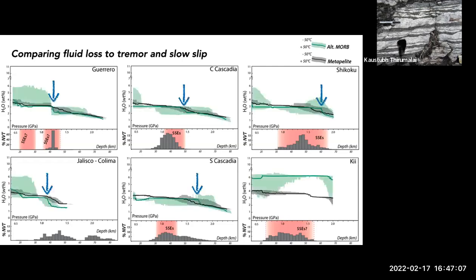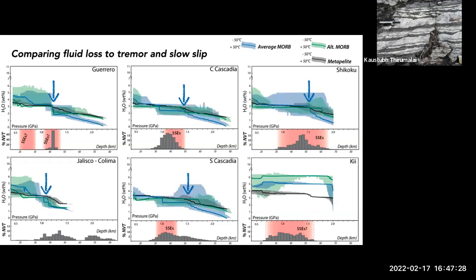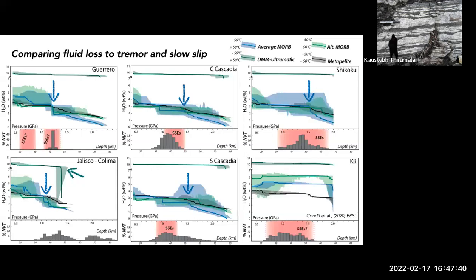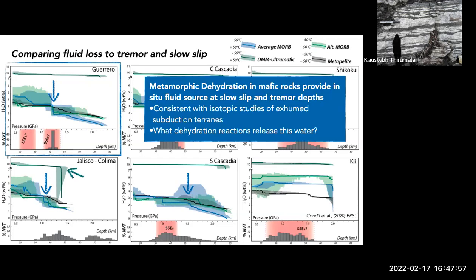We see an even stronger relationship with average MORB — releasing up to two weight percent water in Guerrero, and similarly in southern Cascadia/Clallam, Cascadia, and Shikoku. When we look at depleted harzburgite mantle (our ultramafic rocks), in almost all areas the rocks don't get hot enough for serpentine to break down, except for southern Cascadia/Clallam, which is a very hot subduction zone. This suggests that metamorphic dehydration in mafic rocks can potentially provide in-situ fluid sources at slow slip conditions, which is consistent with isotopic studies.